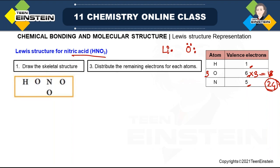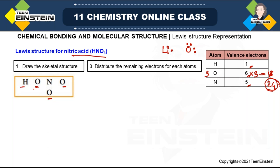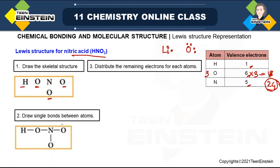For HNO₃, the central atom is nitrogen. In the skeletal structure, nitrogen makes bonds with all three oxygens, and hydrogen makes a bond with one oxygen — there is no direct bond between hydrogen and nitrogen. First draw single bonds between all connected atoms; each single bond uses two electrons. With four single bonds drawn, you have used eight electrons; 16 electrons remain. Distribute remaining electrons as lone pairs, preferentially on oxygen since oxygen has the highest electronegativity. Then check whether all atoms have completed octet configuration — except hydrogen where only a duplet is needed.